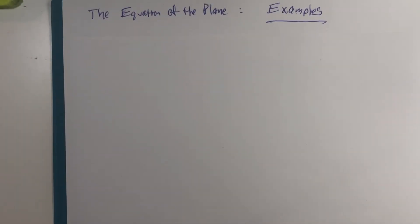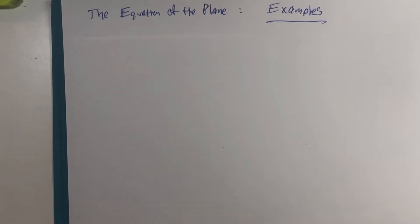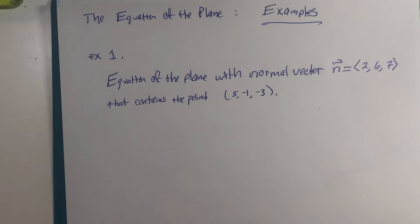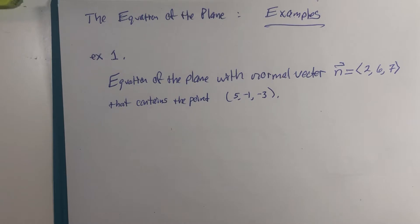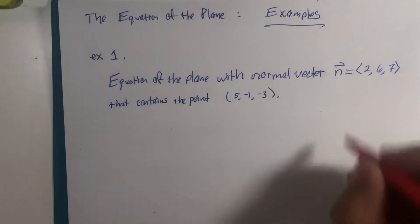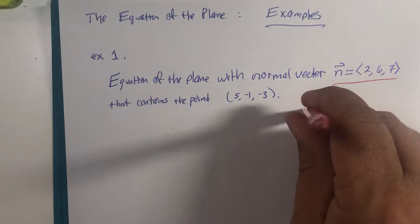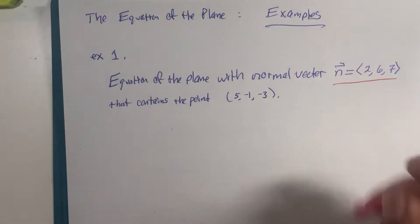Let's now practice with the equation of the plane we just derived. The first example is the most straightforward, but we've got to start somewhere. We have directions to write the equation of the plane with the normal vector — that's the vector that sticks vertically, or straight out of the paper, at a right angle to all vectors on the plane.